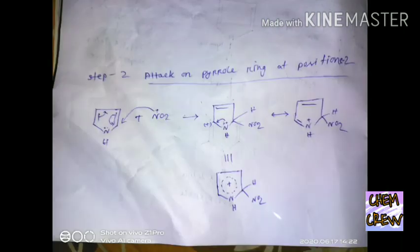So to form the electrophile, we have taken a mild reagent, acetic anhydride, and it will react with HNO3 and form acetyl nitrate nitronium ion. Here, the electrophile is acetyl nitrate. In step 2, attack on the pyrrole ring at position 2, that means the C2 position.